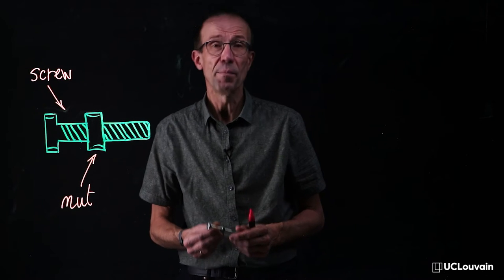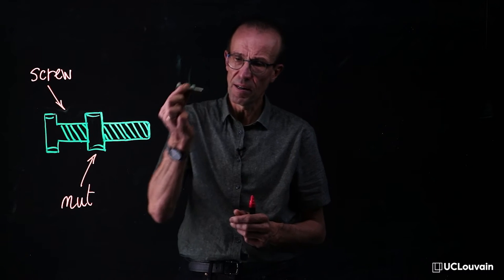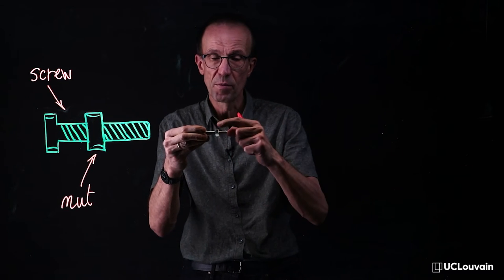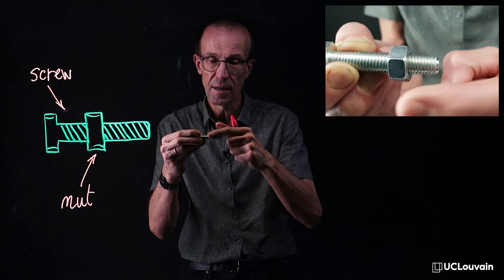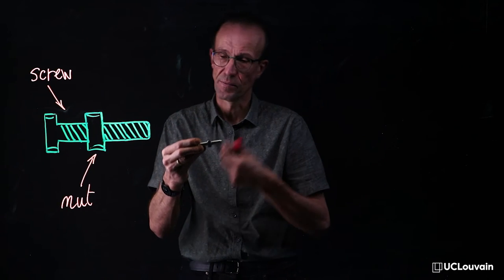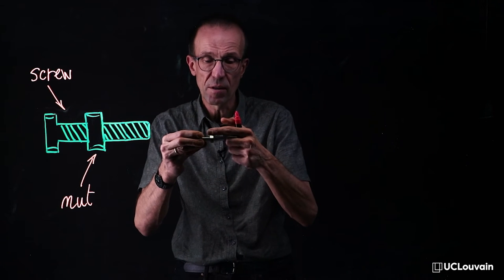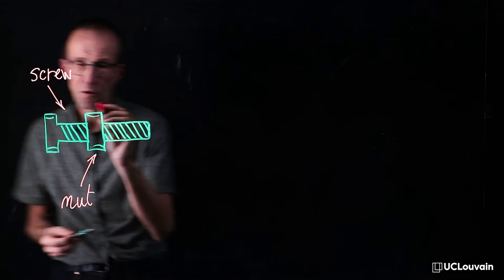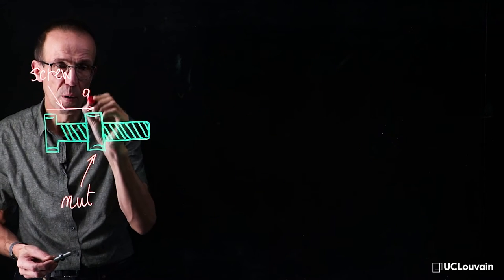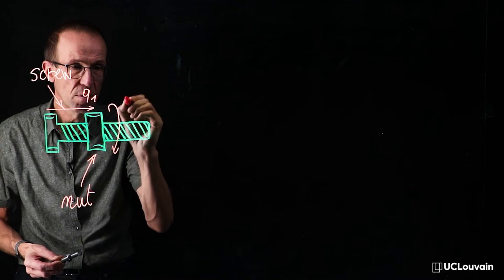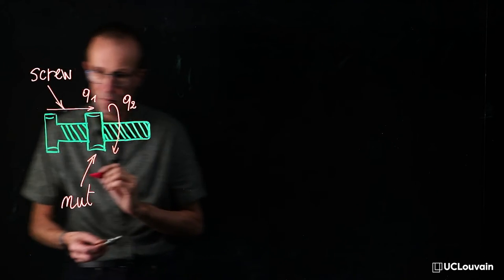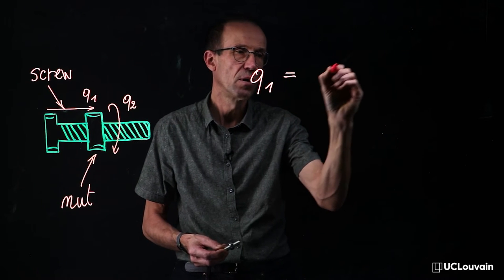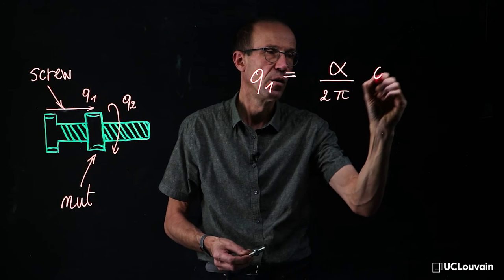As a second practical example, let's consider a helicoidal joint, as one can find in a screw-nut pair. In this system, the nut is both translating and rotating on the screw, but both motions are synchronized via the thread. In a multi-body approach, let's denote the translation of the nut by Q1 and the rotation of the nut by Q2. This leads to an algebraic constraint that reads Q1 equals α over 2π times Q2.